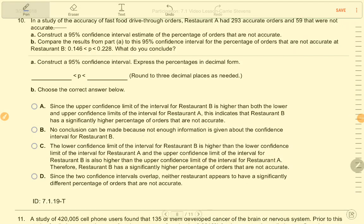Let's read this one. In a study of the accuracy of fast food drive-thru orders, restaurant A had 298 accurate orders and 59 that were not accurate. So that means one of these values is X, the number of successes, and the other is the number of failures.